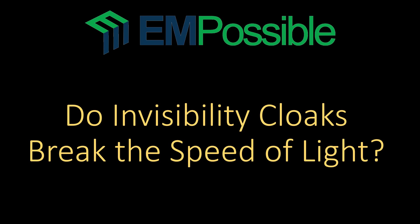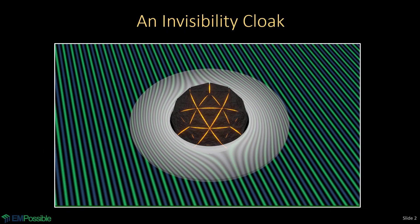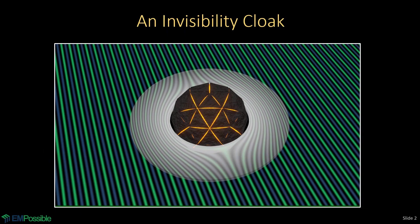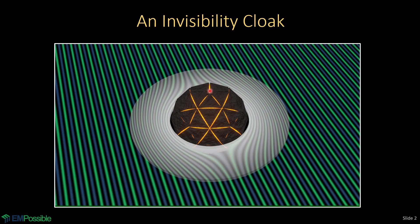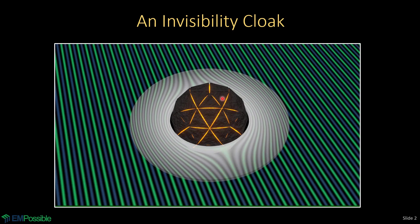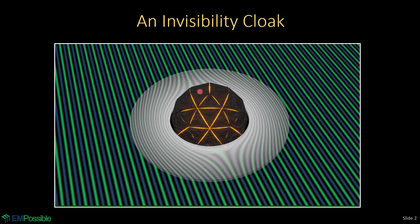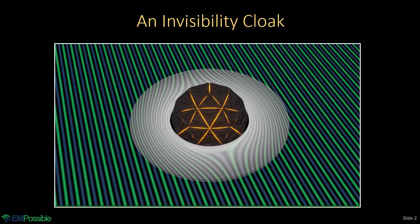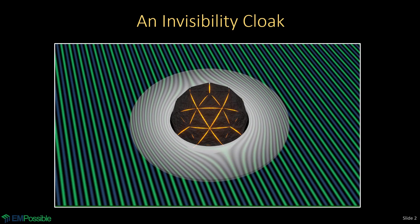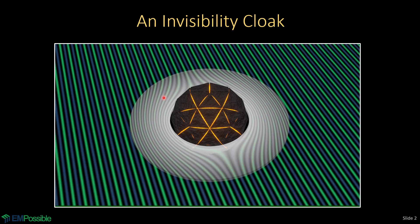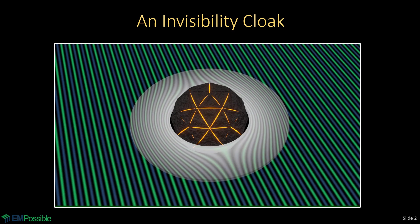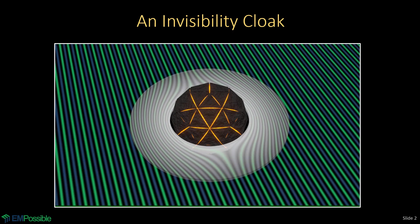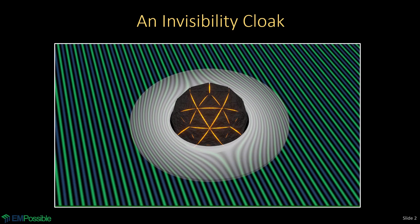Do invisibility cloaks break the speed of light? Let's first consider what an invisibility cloak is. At the center is some strange object that I want to make invisible. I will wrap that inside some magical material that will bend and warp and do whatever it needs to do to the waves to render it invisible.